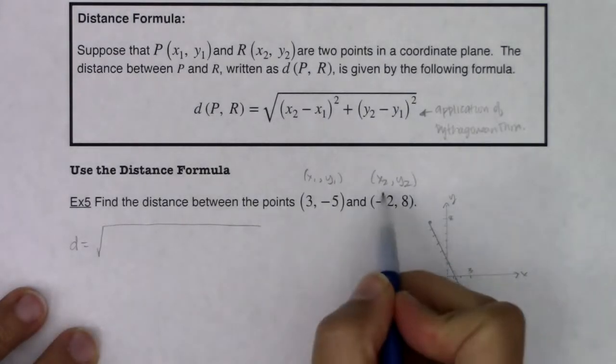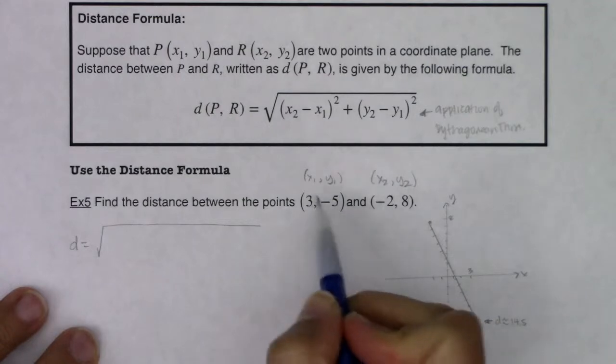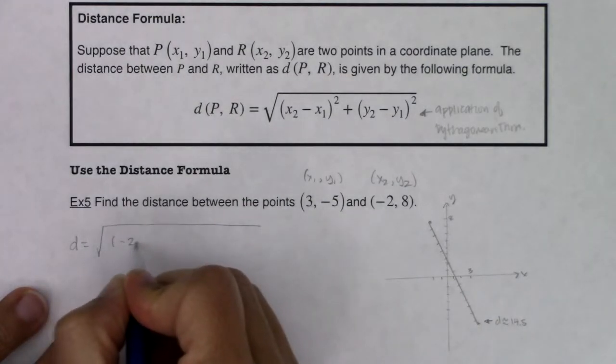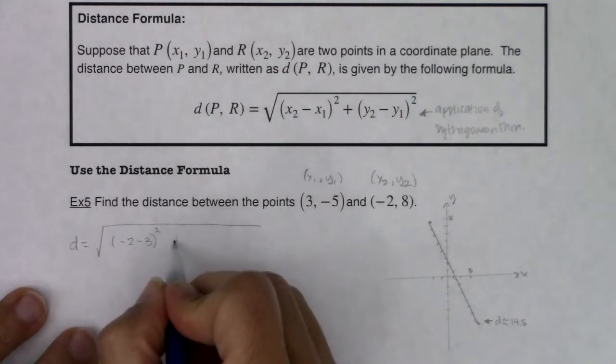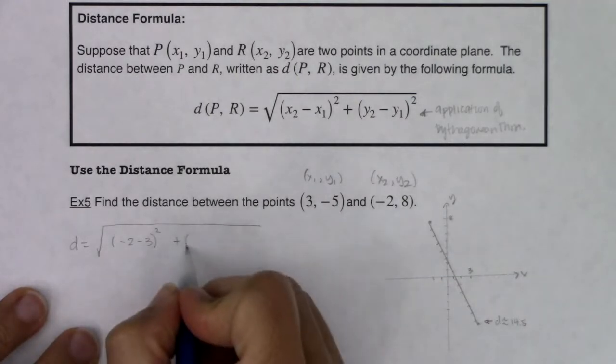So if I do this, if I'm going to go x2 minus x1, I'm going to subtract the x-coordinates. So I'm going to get -2 minus 3. I'm going to square that difference. I'm going to add to that y2 minus y1.